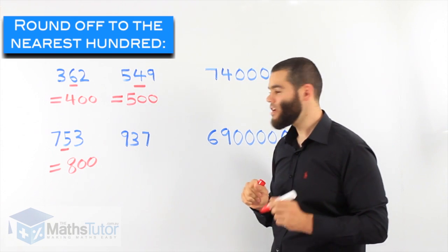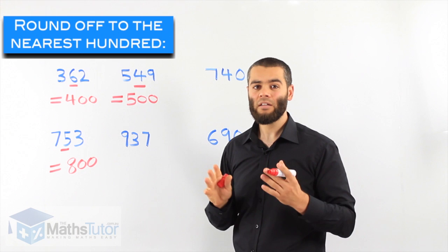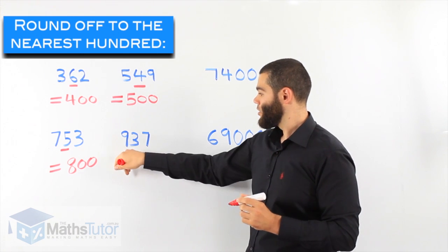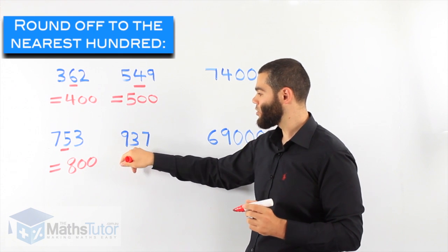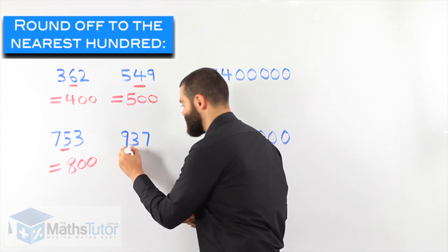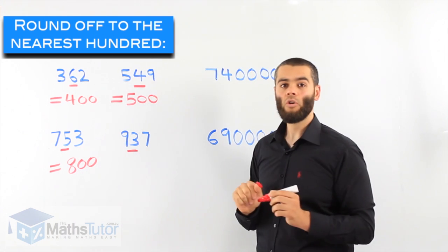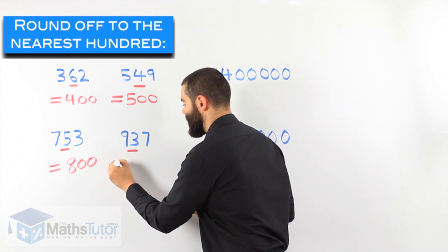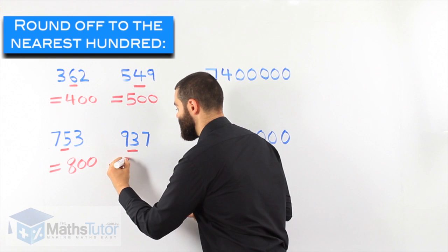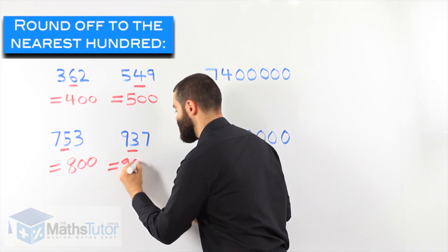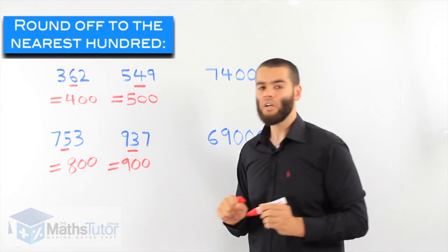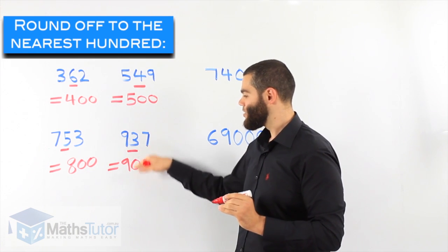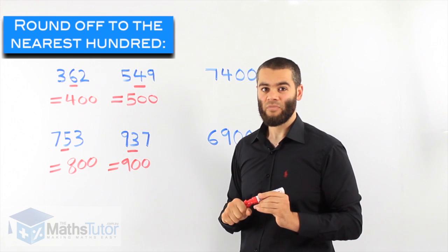Another example: nine hundred and thirty-seven. Round off to the nearest hundred. This is our hundreds column. We look to the number on the right and we ask: are you five or more? No — it's actually less than five. That means we have to round down. So nine hundred and thirty-seven to the nearest hundred becomes nine hundred. It doesn't have enough muscles to push up, so we round down.